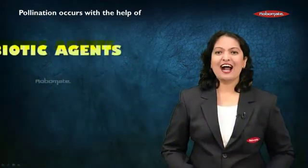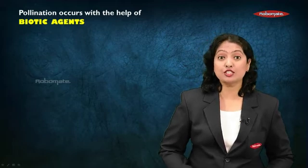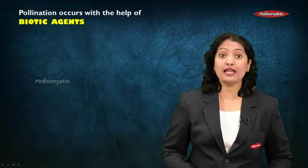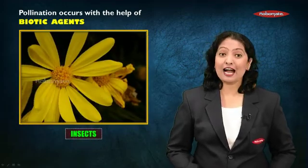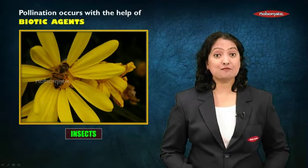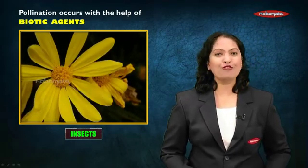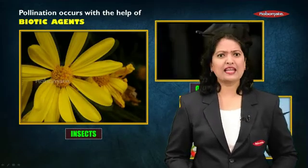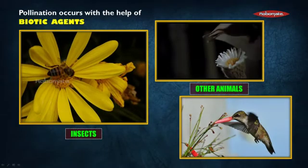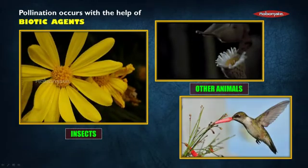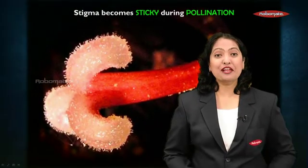There are also some biotic agents — living organisms — that help in cross-pollination. For example, insects like honey bees; if pollination takes place with the help of insects it is called as entomophily. There can also be birds, bats, or animals like even elephants helping in pollination.